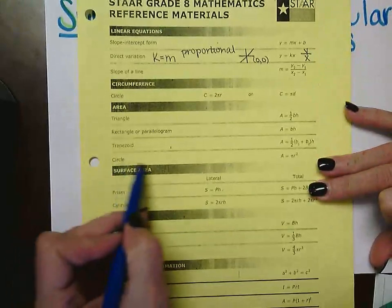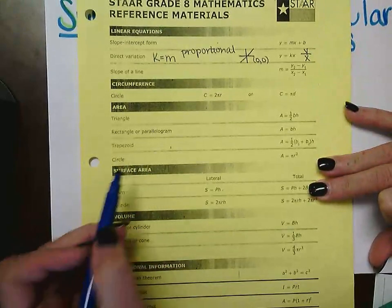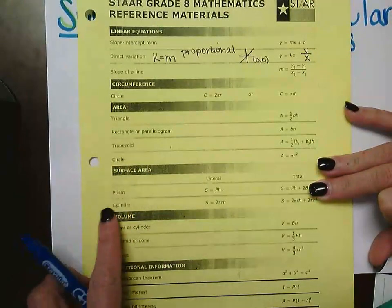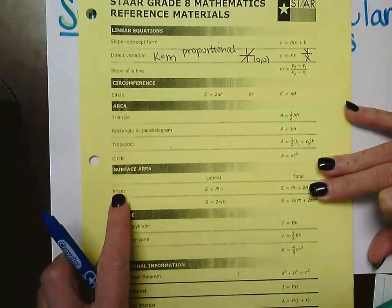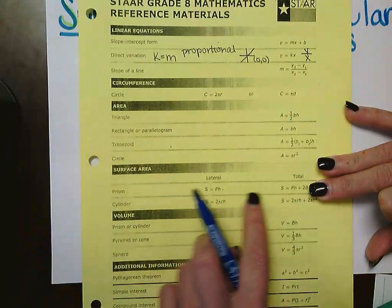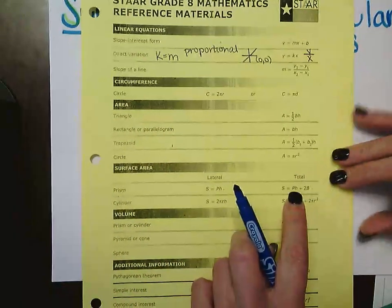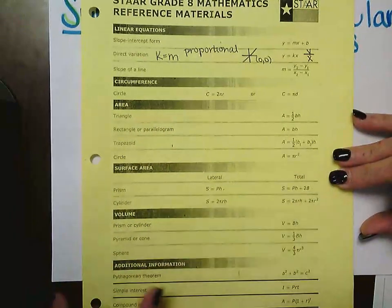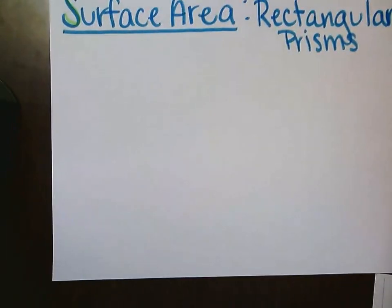We're going to look at the star chart right here at surface area, and where it says 'prism' — because it's a rectangular prism — these are the formulas that we're going to focus on today. I'm going to draw some pictures and explain some things.